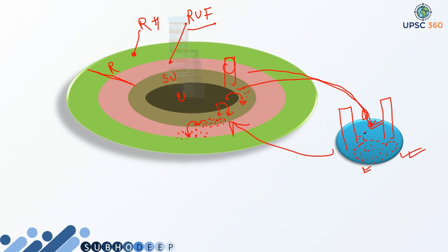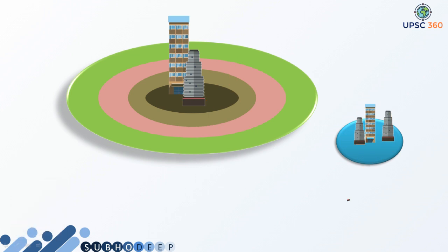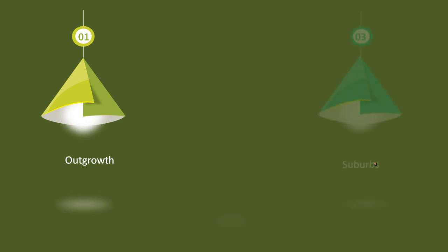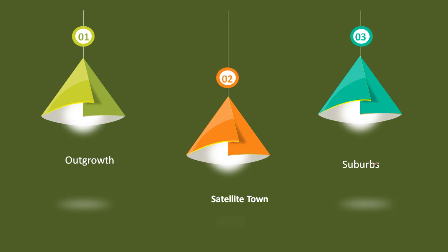In main cities there are huge buildings, but in satellite towns also there are few buildings. In the initial stage, the number of buildings in satellite towns is respectively less, but as time passes and many different other industries and towns start setting up there, the town grows. Now, before coming to the main definition of satellite town, we will discuss three concepts: the first is outgrowth, the second is suburbs, and the third is satellite town. Let us discuss them one by one.